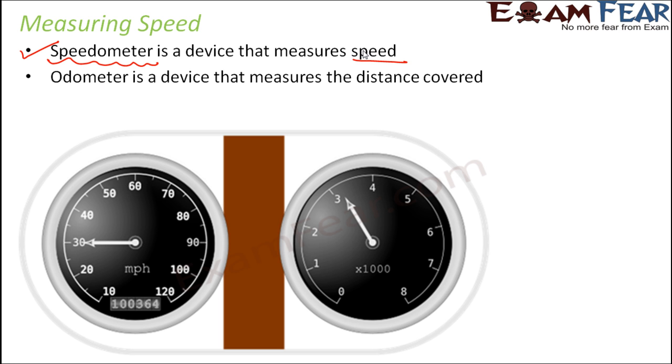Similarly, there is another device called odometer and it measures the total distance that is being covered till now. Inside the car you have two meters like this. One of these will measure the speed - kilometers per hour - that's the speedometer.